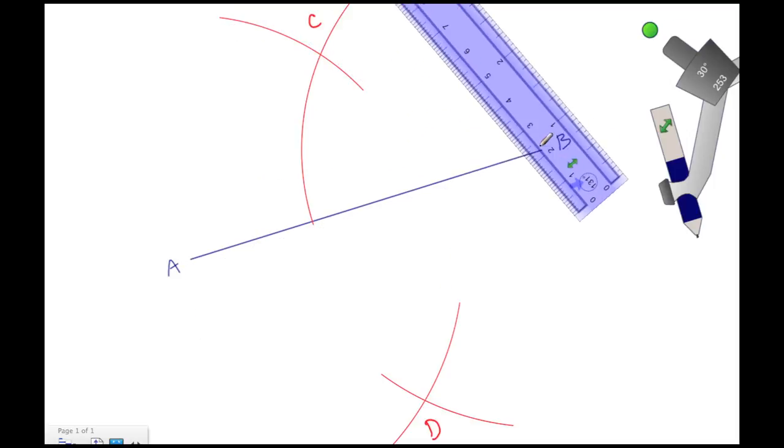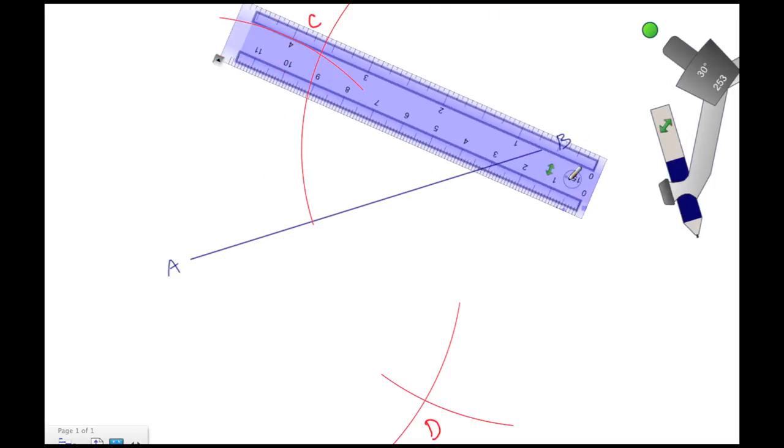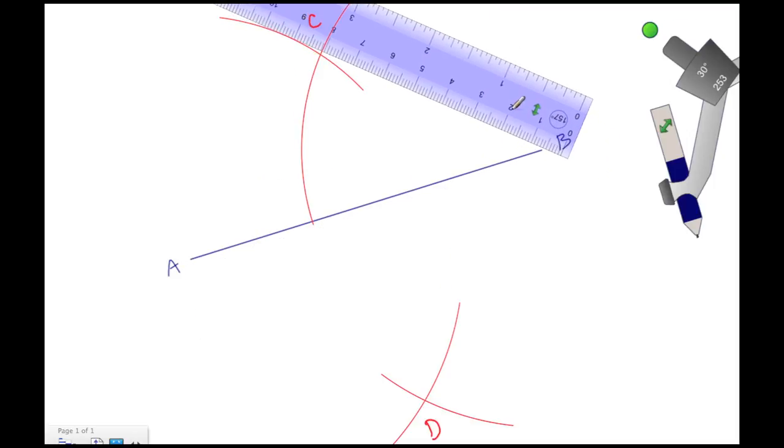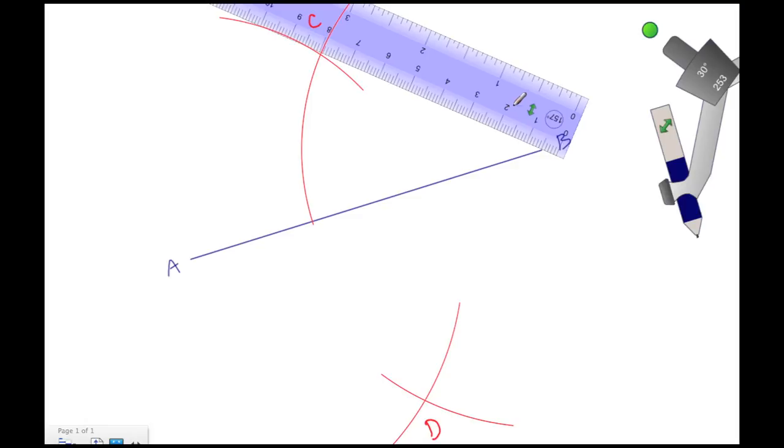Let's begin here by connecting intersection C with endpoint B. Once that's in place, let's draw this line segment here.